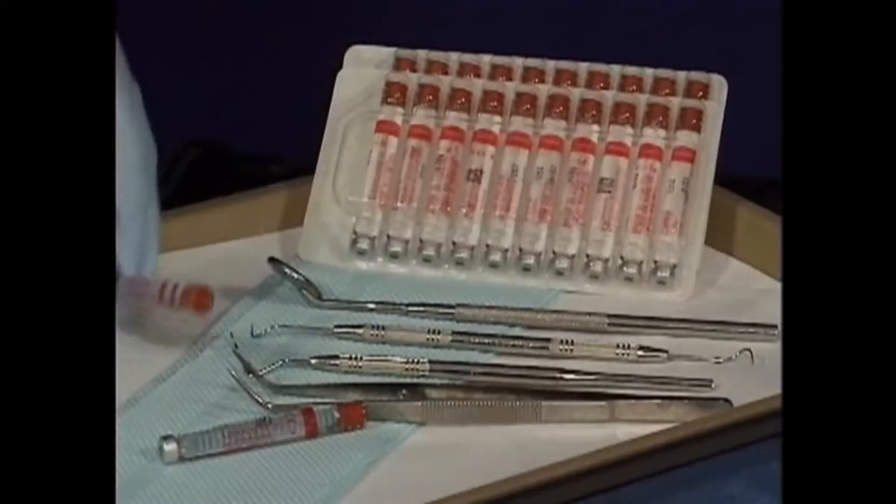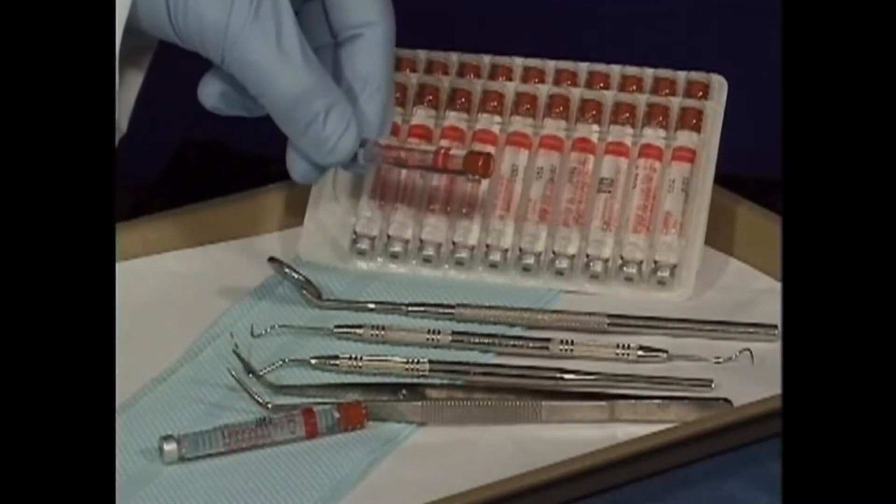For the surgical placement of the implant, your mouth will be numbed. An incision is made in your gums and a channel is made in the bone to receive the implant. After the implant is snugly in place, the gums are closed over the implant with a stitch or two.